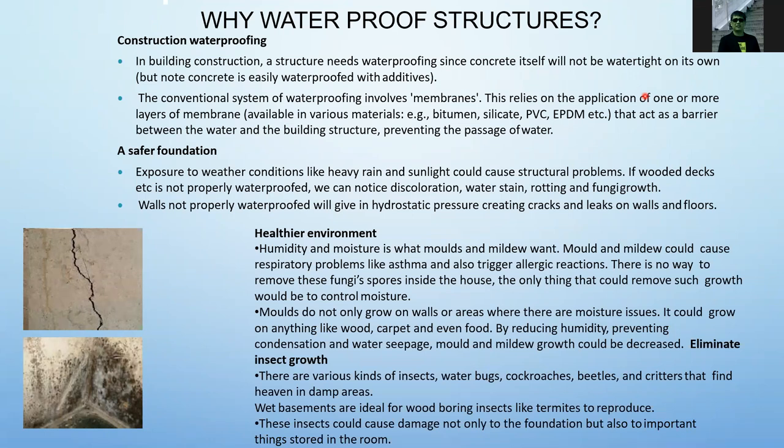If you did not do waterproofing on the exterior of your building, there will be water seepage, water marks, cracks on the wall, and paint will chip off or peel from the wall surface. Another reason to waterproof is for a healthier environment — humidity and moisture promote mold and mildew growth, which can cause respiratory problems like asthma and trigger allergic reactions. The only way to control such growth is by controlling moisture.